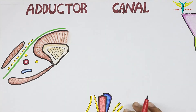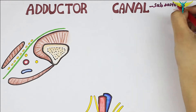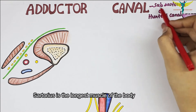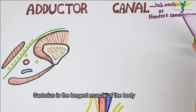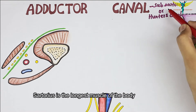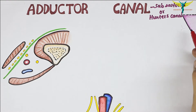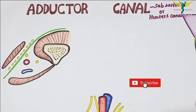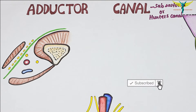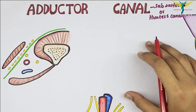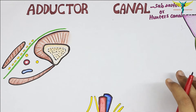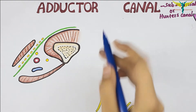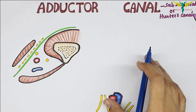The adductor canal is also called the subsartorial canal or Hunter's canal. It is called the subsartorial canal because its roof is formed by the sartorius muscle, and it is called Hunter's canal because of the clinical significance of a procedure performed by a famous surgeon called Dr. John Hunter, which we will discuss in the clinical correlation.